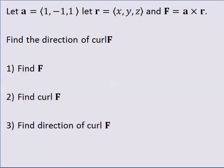Let's just end with an example. Let a be the vector 1, negative 1, 1. And we're going to make a rotation vector field from this vector a. And then we're going to find the direction of the curl of f.